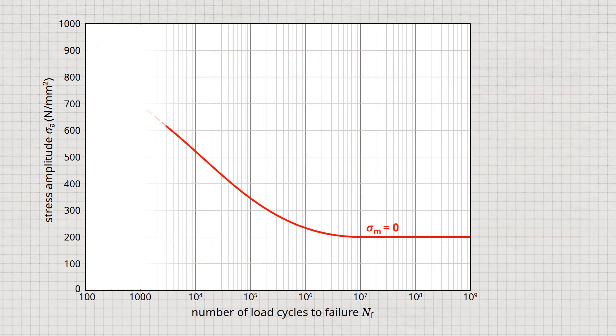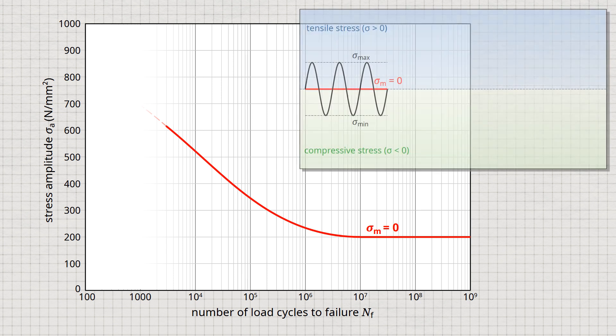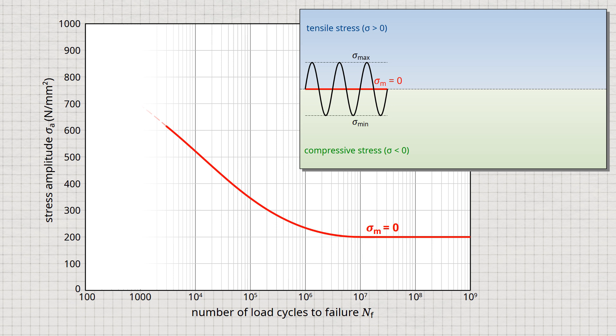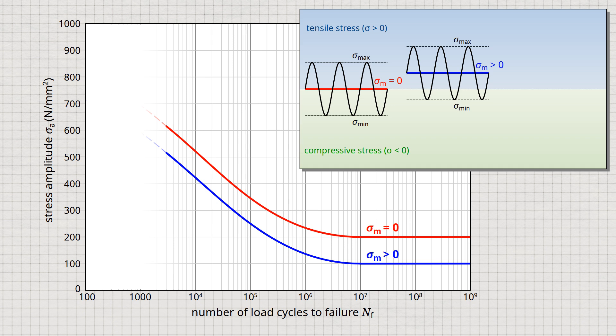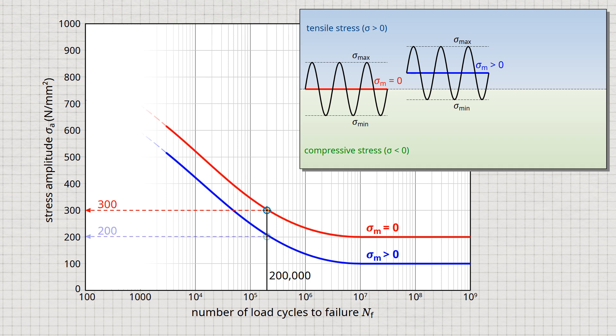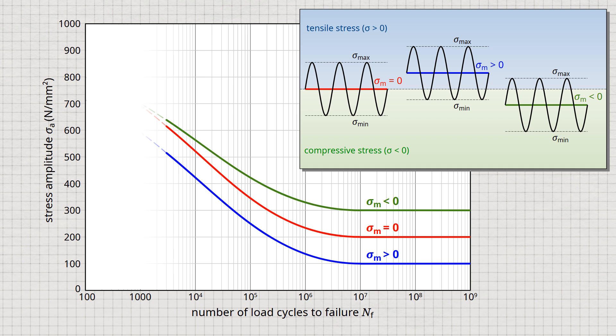The Wöhler curve shown is for a mean stress of zero, meaning a purely alternating stress. Mean stress has a particular influence on the course of the Wöhler curve. With the same stress amplitude, a higher mean stress causes higher maximum and minimum stress, subjecting the sample to greater loads. Despite the same stress amplitude, the sample breaks at lower load cycles. Consequently, the same number of stress cycles with a higher mean stress can only be achieved by a reduction in the stress amplitude, so the Wöhler curve is shifted downwards for mean stresses greater than zero. If mean stresses are shifted into the negative compressive range, the opposite effect is observed: despite the same stress amplitude, the sample can endure a higher number of load cycles, and the Wöhler curve is shifted upwards.